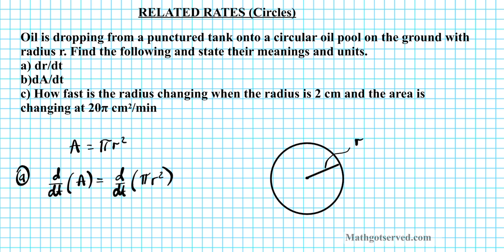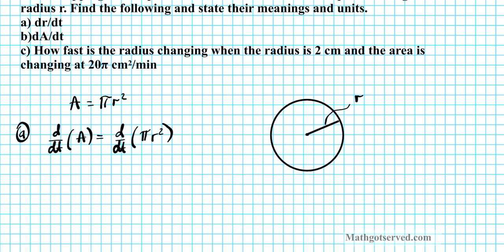Using the power rule, derivative of A to the first power is just 1. Using the chain rule, dA/dt since we're differentiating with respect to t time. And then if we differentiate this expression right here, we can factor out pi since it's a constant. If we differentiate r squared using the power rule, we'll have 2r and then applying the chain rule, dr/dt.